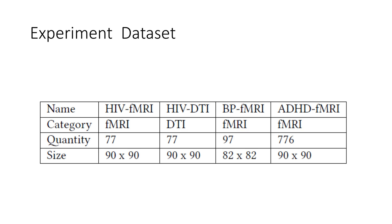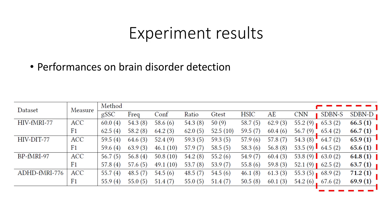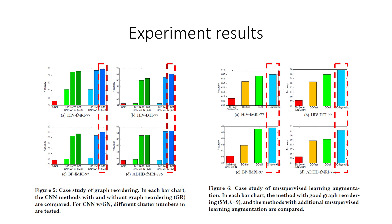We evaluate our model on four real-world brain network datasets from three different neurological disorders. We investigate the effectiveness of the learned structure-preserving graph feature representation for brain disease detection. We further test the effectiveness of graph reordering and unsupervised learning augmentation.